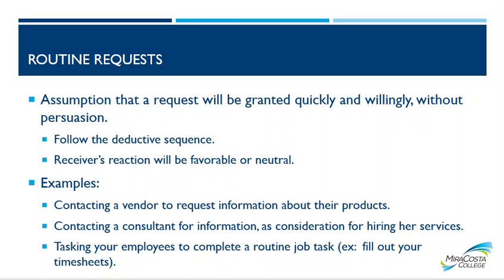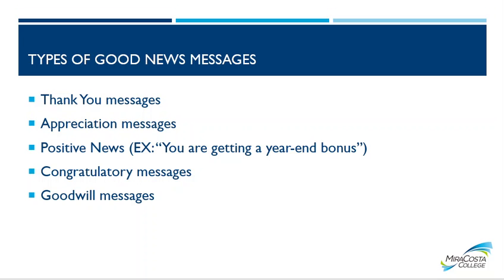Routine requests you might see: the assumption is that a request will be granted quickly and willingly without persuasion, because you're giving good news and following the direct sequence. The receiver's reaction will be favorable or neutral. Examples could be contacting a vendor to request information about their products, contacting a consultant for information as consideration for hiring their services — to them that's a sales lead — or tasking employees to complete a routine job task such as filling out a timesheet. Other types of good news messages include thank you messages, appreciation messages, positive news such as a year-end bonus, and congratulations and goodwill.